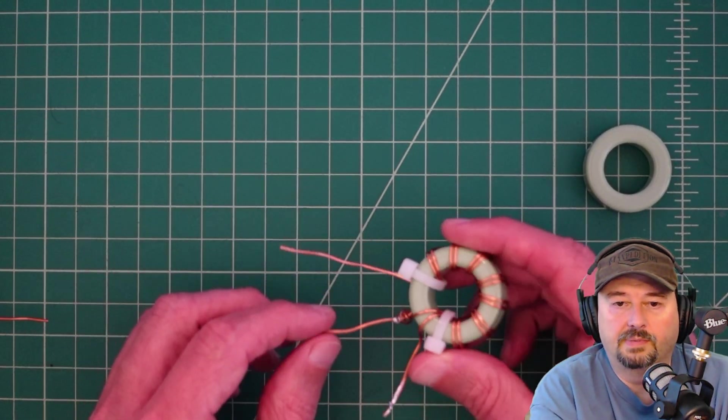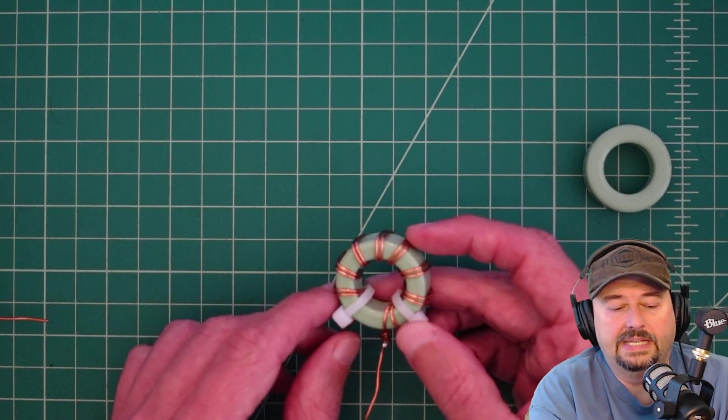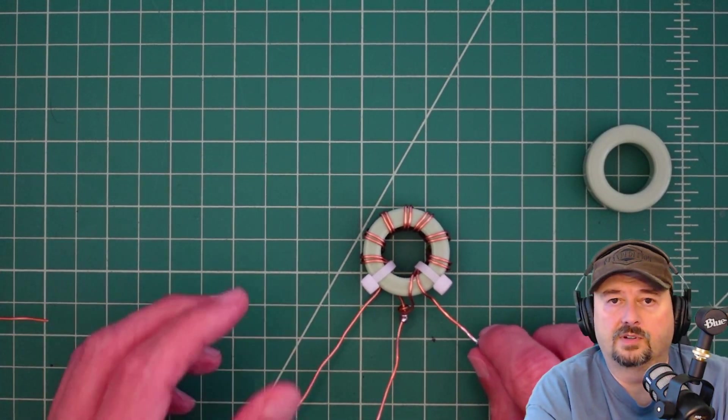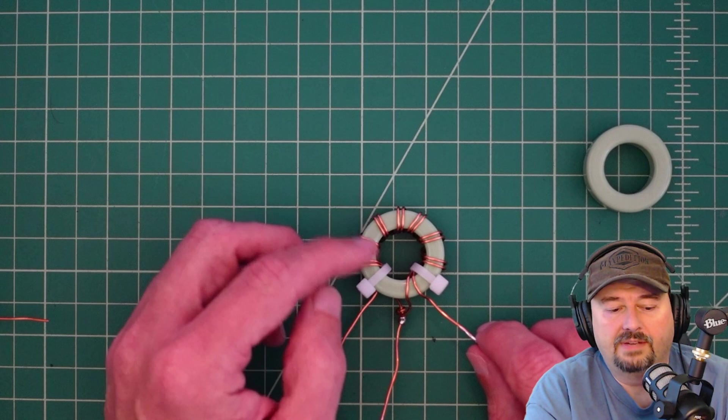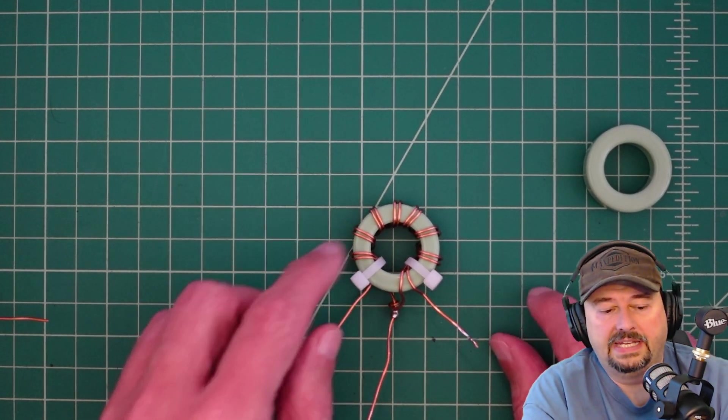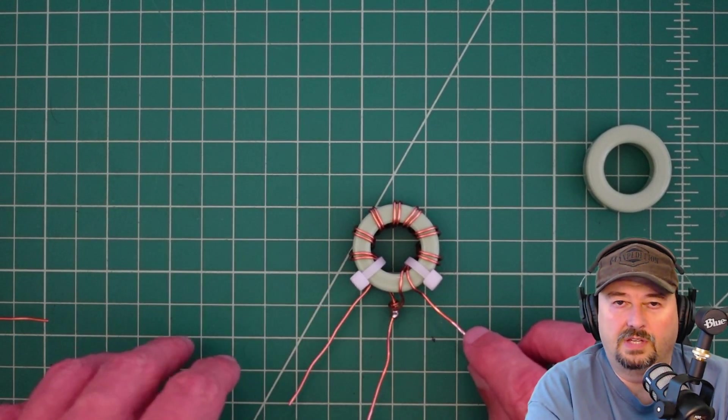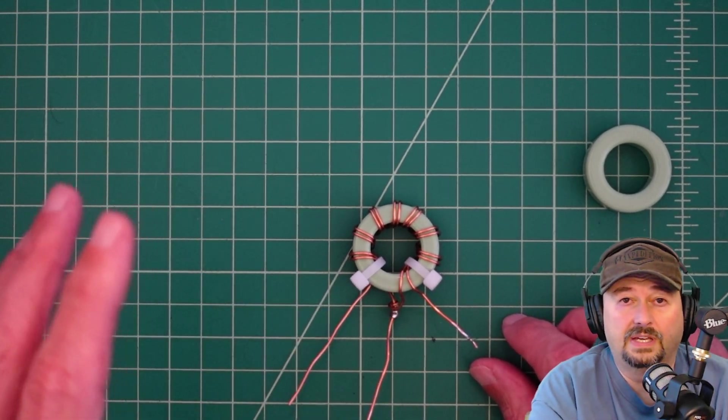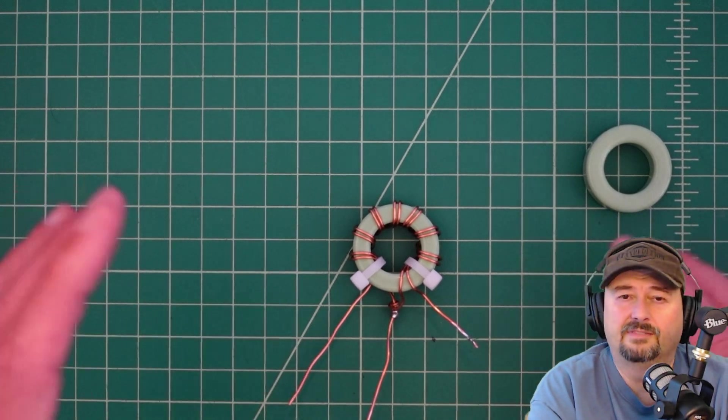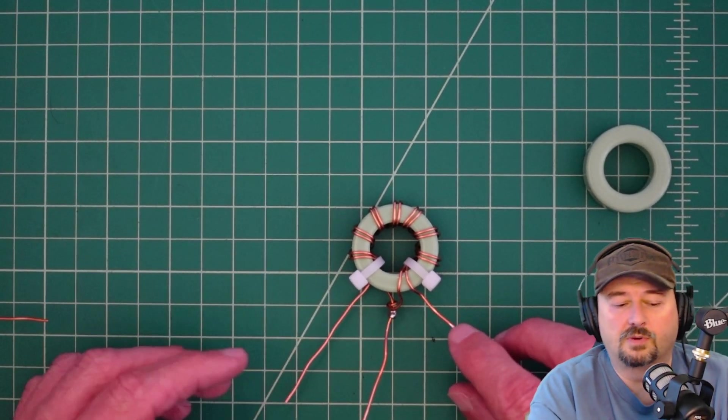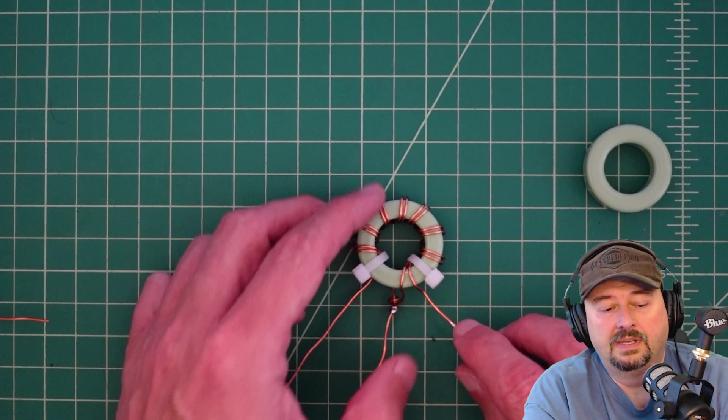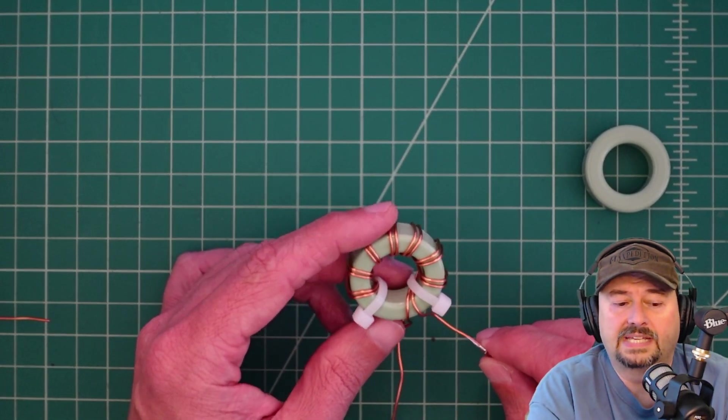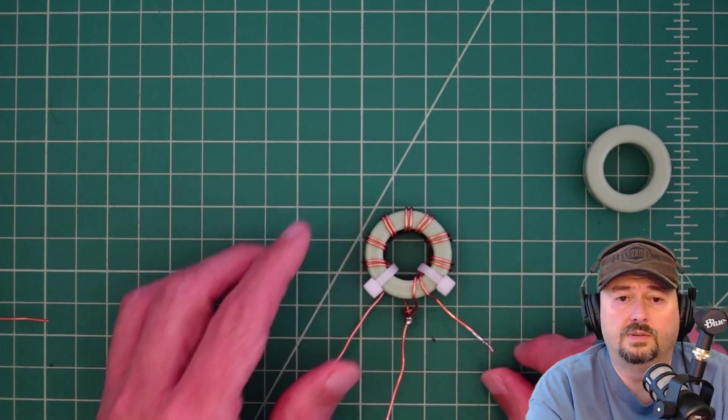All right folks, in this video we're going to talk about this toroidal core that we use on the Cartenna Poseidon vertical antenna. It's wound in a 4:1 configuration, and depending on how you connect it to your transmission line, it can either be an unun or a balun. I've got a video called unun versus balun for 4:1 transformers if you want to learn more. The reason I'm doing this video is we've gotten a lot of questions about how to wind this core, so we're going to do that in this video.